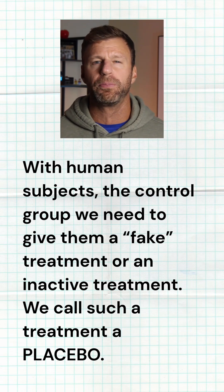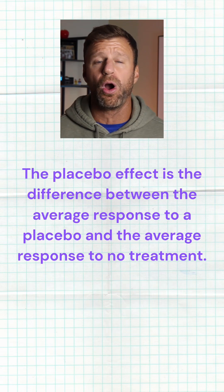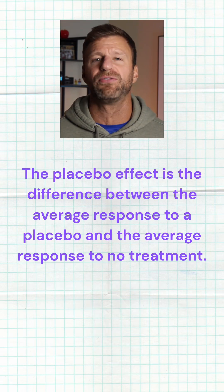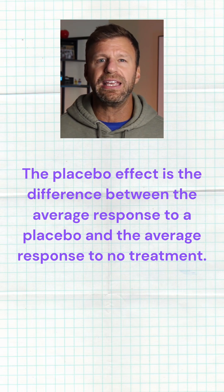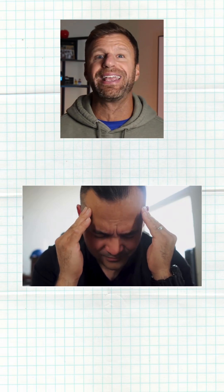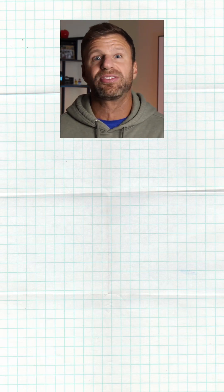The placebo effect is the idea that when a human being is involved in an experiment, they're going to immediately think that something positive may happen when they get something, or if they know that they're not getting something, they might experience a negative impact. We don't want that to happen, so we want everybody to think they're getting something. That's why we give the control group something fake — that way they think they're getting something, and so does the other group.